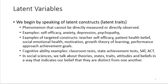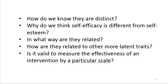In social sciences, we talk about theories, states, traits, attitudes and beliefs in a way that indicates our belief that they are distinct from one another. But how do we know they're distinct? Why do we think self-efficacy is different from self-esteem? They're probably very highly correlated, but they're not the same. Is it valid to measure the effectiveness of an intervention by a particular scale? So I have an intervention, I write a scale, and I think that scale is going to be able to measure change. The ability to measure change is an important feature of scales, and you can't take it for granted that the scale will be effective in measuring change in the construct.